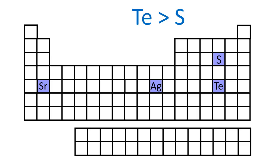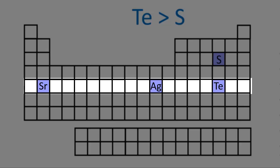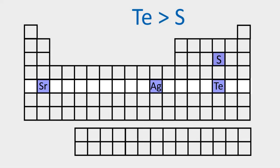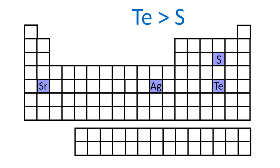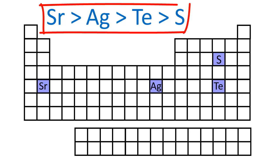Notice also that tellurium is in the same period as silver and strontium. Since atomic radius tends to decrease going from left to right across a period, silver has a larger atomic radius than tellurium, and strontium has a larger atomic radius than both silver and tellurium. So from largest to smallest, it's strontium, silver, tellurium, and sulfur.